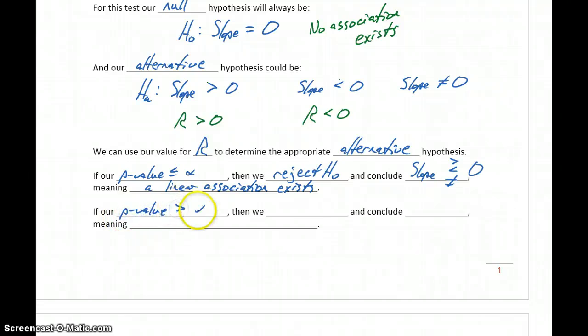If our p-value is larger than our significance level, then we fail to reject the null hypothesis and conclude that our slope equals zero, meaning no linear association exists.